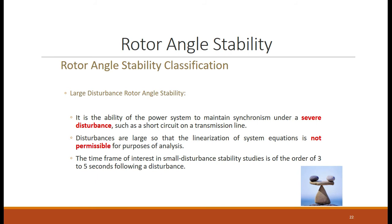When the disturbance is large and the angle delta keeps on increasing, the time frame for large disturbance rotor angle stability is curtailed to 3 to 5 seconds, because the disturbance is large and appropriate action must be taken within a shorter time so that the generator does not lose its synchronism.